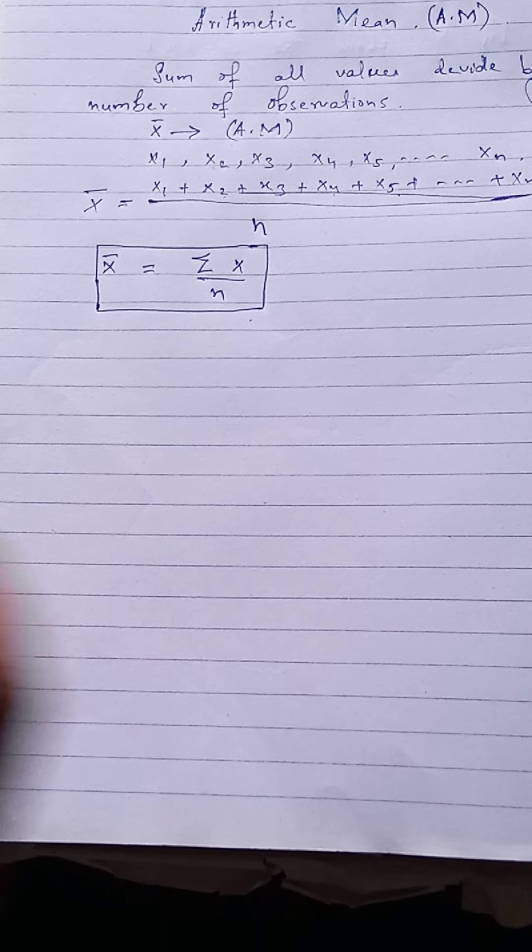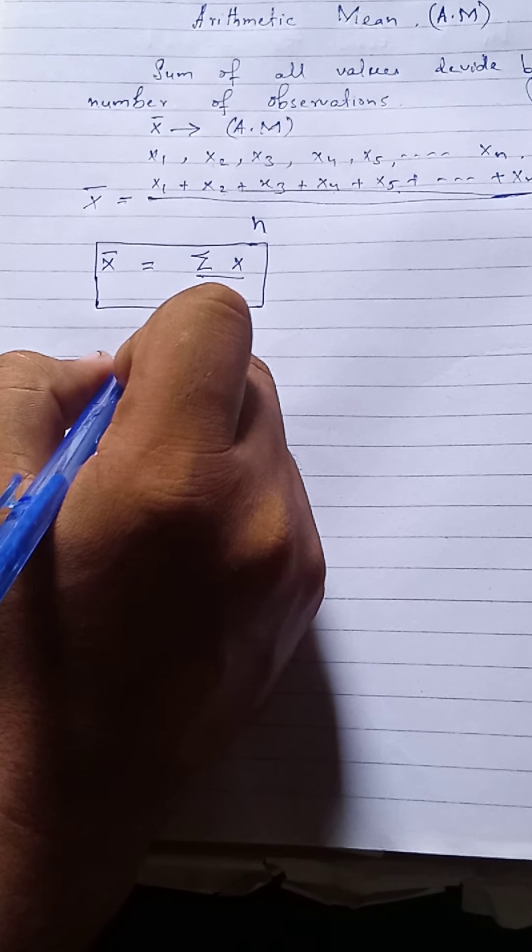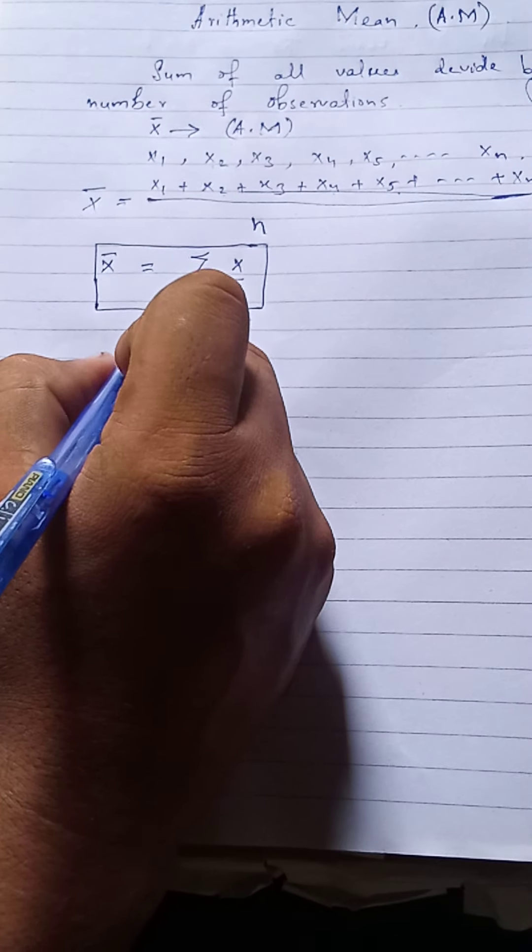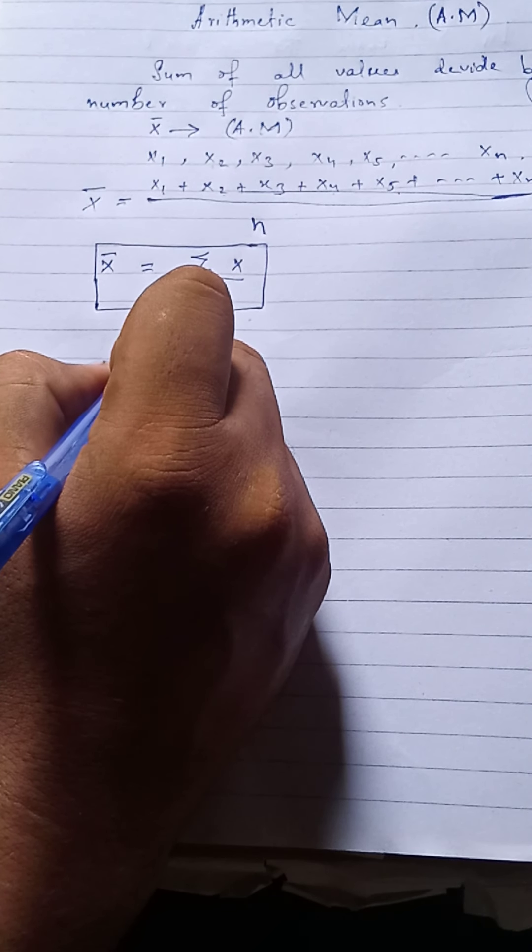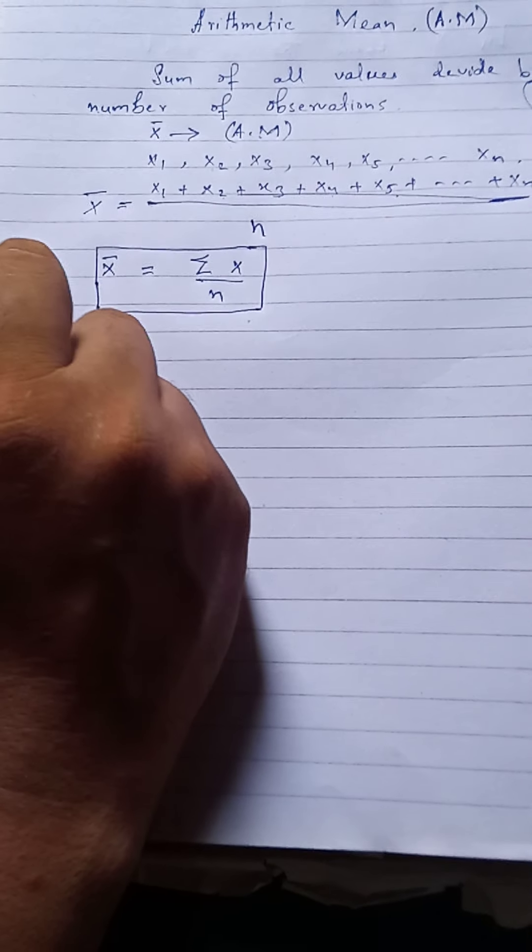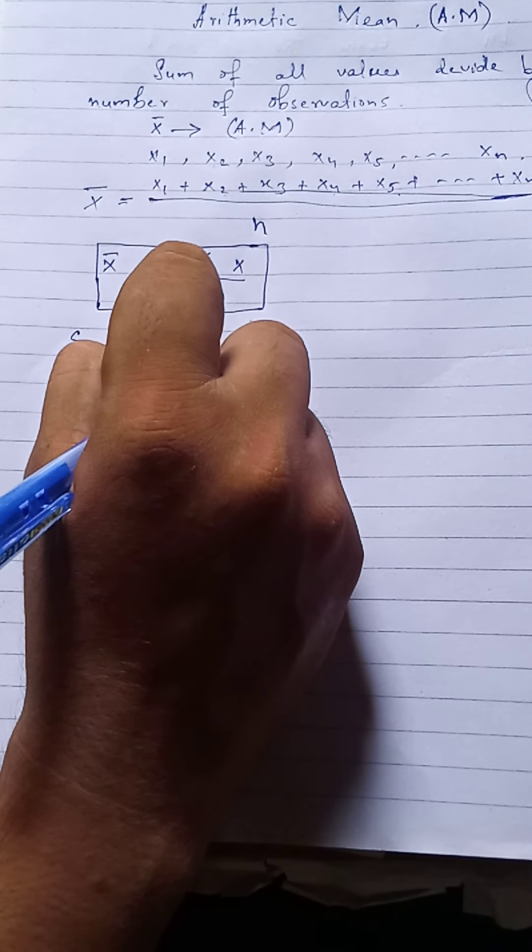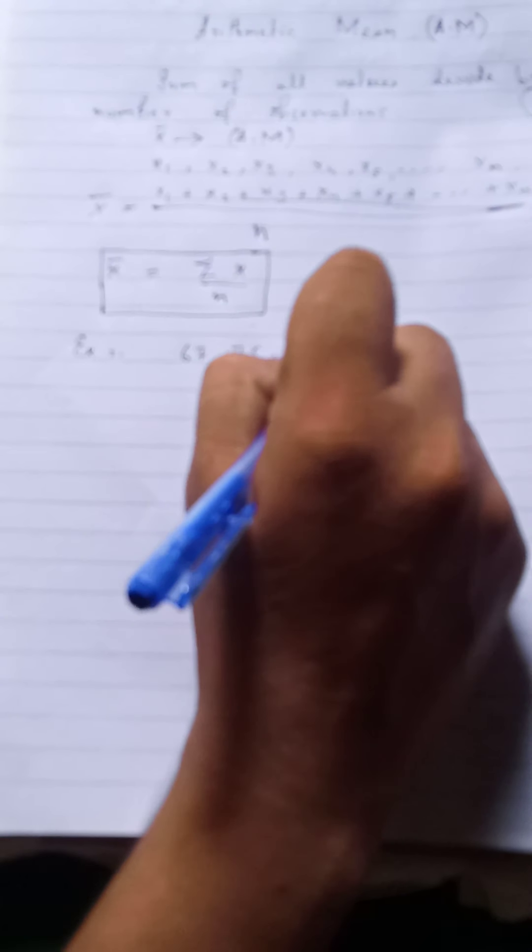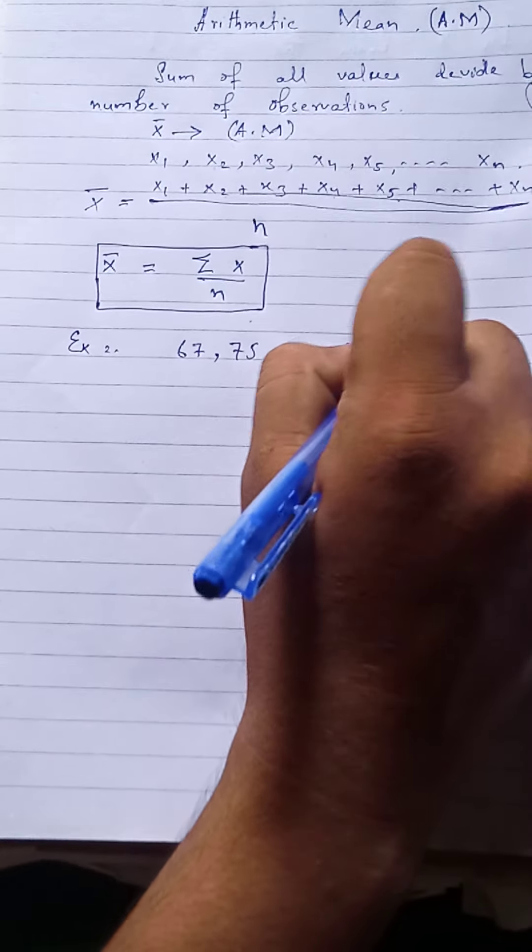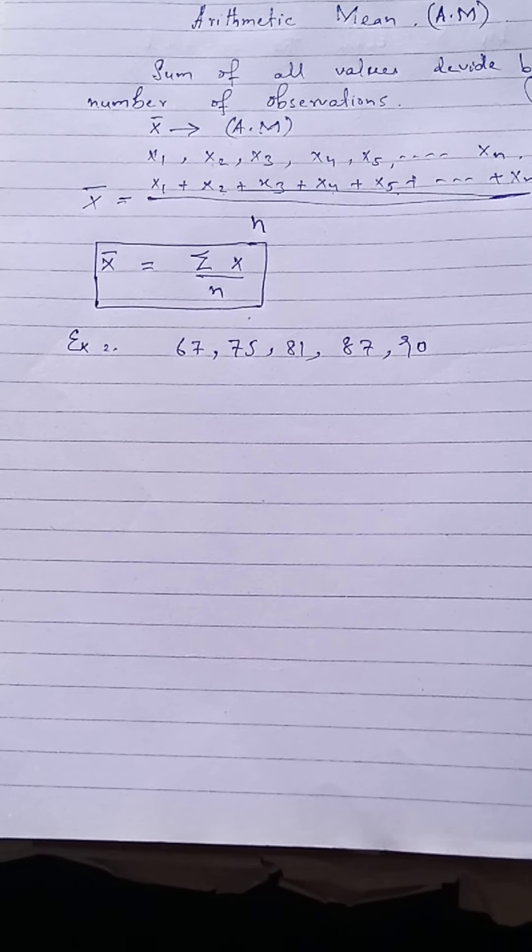हम example लेते हैं। अगर कोई student subjects में marks लेता है - एक student पहले subject में 67 marks लेता है, दूसरे में 75 लेता है, 81 लेता है, 87 लेता है, और 90।